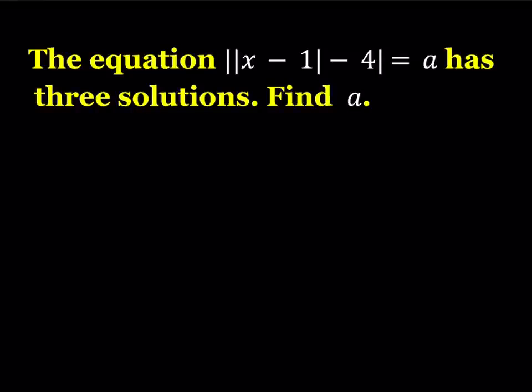So when you have an absolute value equation, suppose you have the absolute value of x equals 5, then we can come up with two solutions from here. We can say x equals 5 or x equals negative 5. So there are two numbers whose absolute value equals 5.